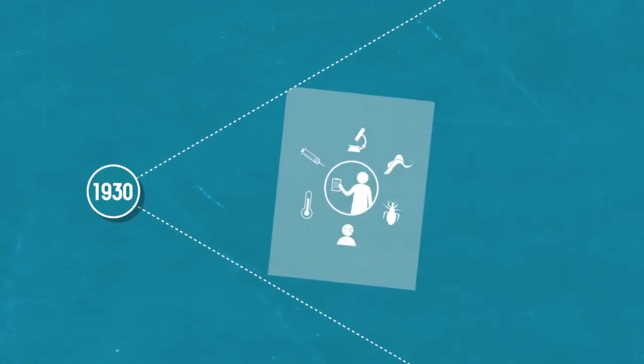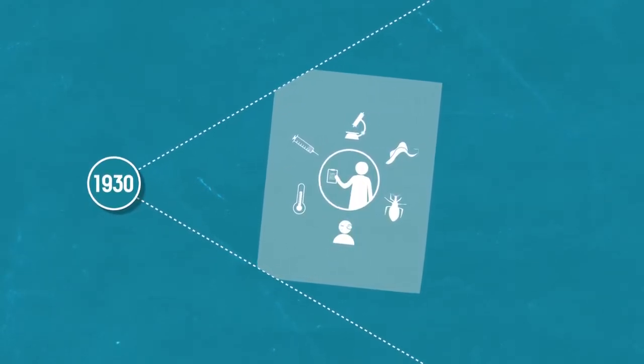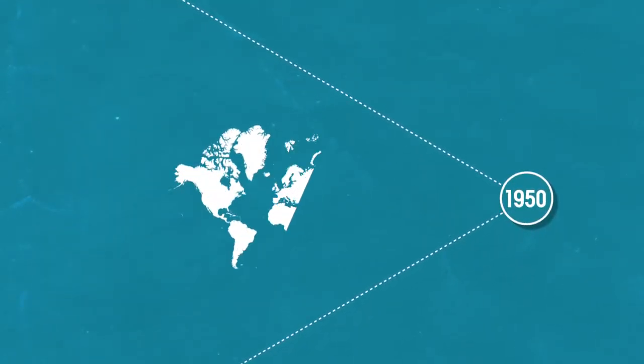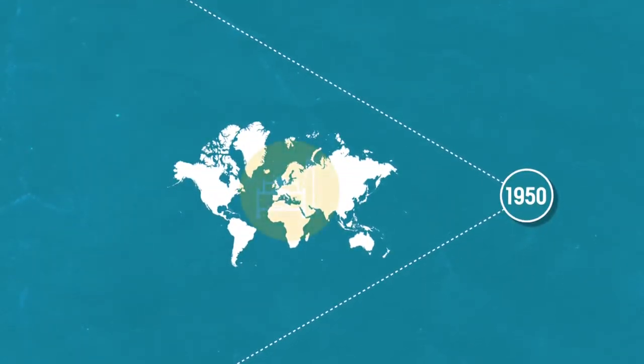It was only in the 1930s that the existence of Chagas disease was recognized and accepted. And it took until the 1950s for it to become acknowledged as a public health issue.